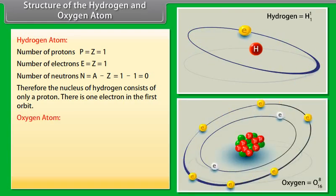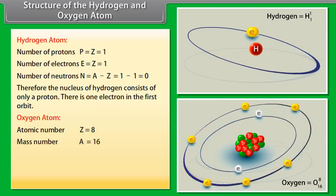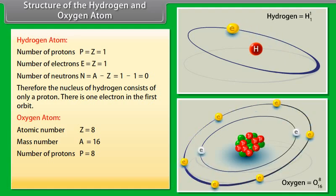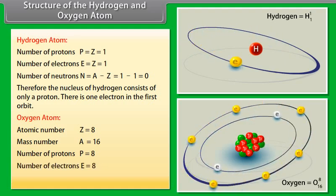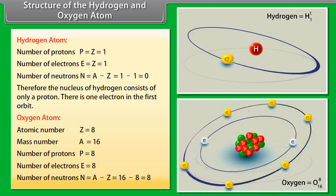Oxygen atom. Atomic number, Z is equal to 8. Mass number, A is equal to 16. Number of protons, P is equal to 8. Number of electrons, E is equal to 8. Number of neutrons, N is equal to A minus Z which equals 16 minus 8 which is equal to 8.